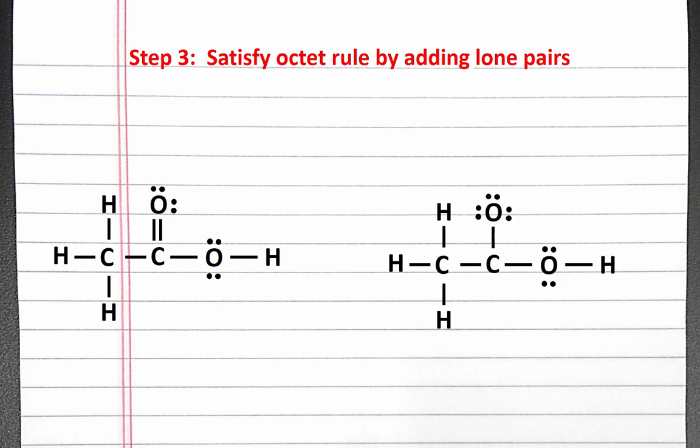This would leave one oxygen atom with three lone pairs of electrons and the other with just one lone pair. Let's evaluate these structures using formal charge to determine which is better.